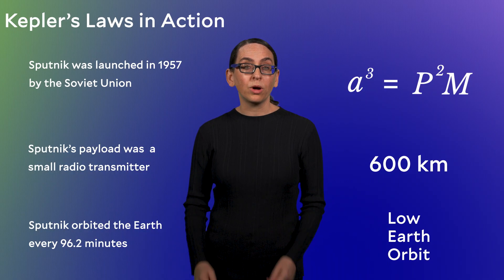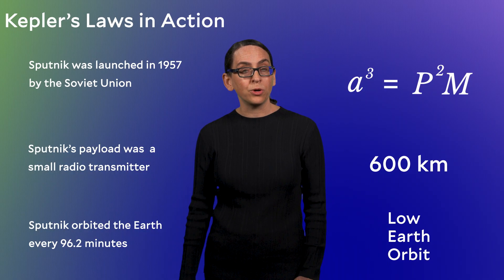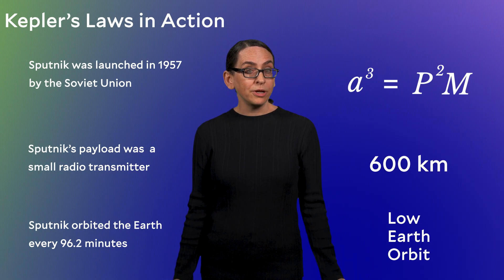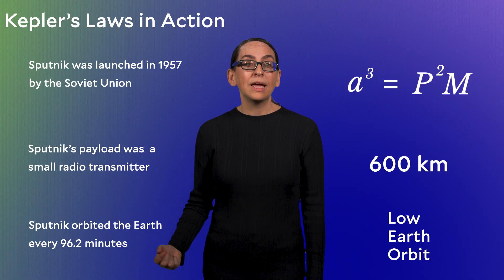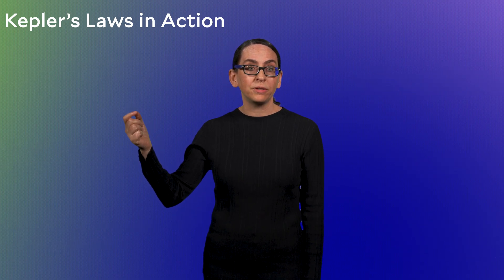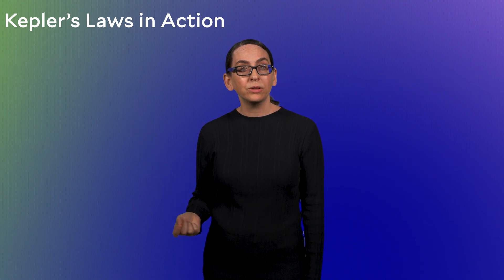Next segment will focus more on low Earth orbits and discuss the pros and cons of putting satellites there. As a preview, one con of low Earth orbit is that there are still trace amounts of Earth's atmosphere in this region that cause satellites to lose orbital energy. Because Sputnik was in a low Earth orbit on a slightly elliptical orbit, it was dragged back down into Earth's atmosphere, burning up within about three months after launch — but not before it sparked the space race of the 1960s and beyond. Now with Kepler's laws in hand, we will apply these in the next segment to low Earth orbits.